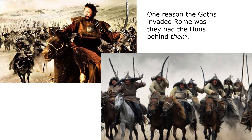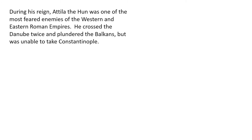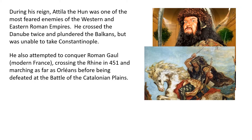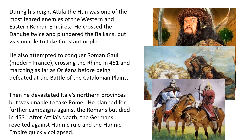External problem number two was that one reason the Goths invaded Rome was that they had the Huns behind them. Attila the Hun led his Mongols across Asia and into Europe between 434 and 453. During his reign, he was one of the most feared enemies of the Western and Eastern Roman Empires. He crossed the Danube twice and plundered the Balkans, but was unable to take Constantinople. He also attempted to conquer Roman Gaul — modern France — crossing the Rhine in 451 and marching as far as Orleans before being defeated at the Battle of the Catalonian Plains. He devastated Italy's northern provinces but was unable to take Rome, and died in 453. After Attila's death, the Germans revolted against Hunnic rule and the Hunnic Empire quickly collapsed.